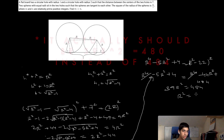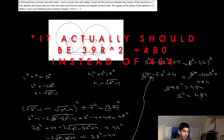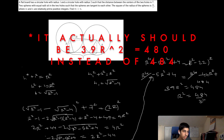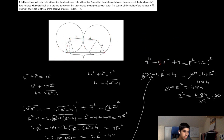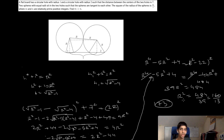So r² = 484/39, which equals 160/13. Thus m = 160 and n = 13, so our answer is 173. Hope you guys enjoyed — if you did, be sure to leave a like, subscribe, and I'll catch you in the next one.